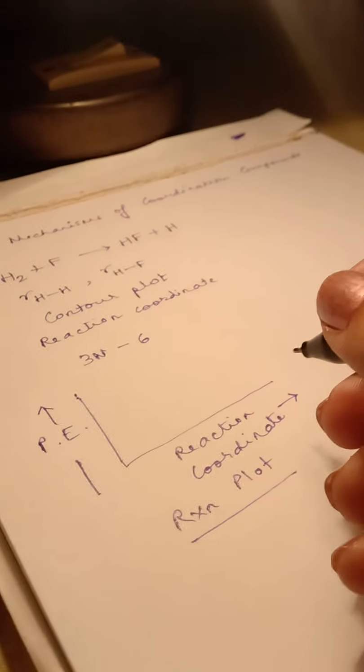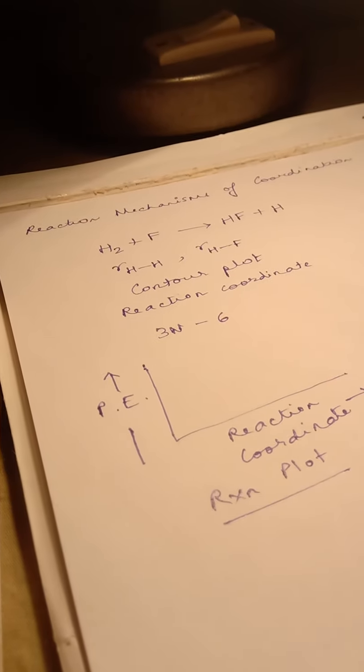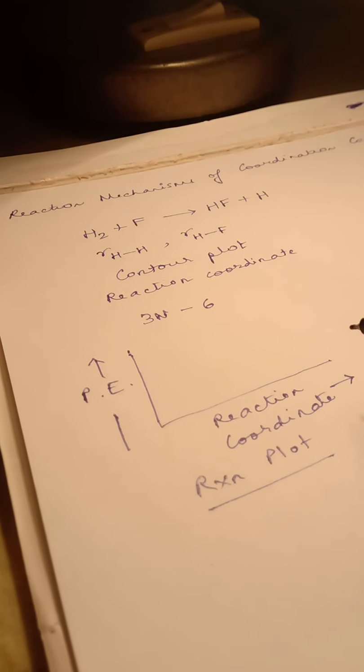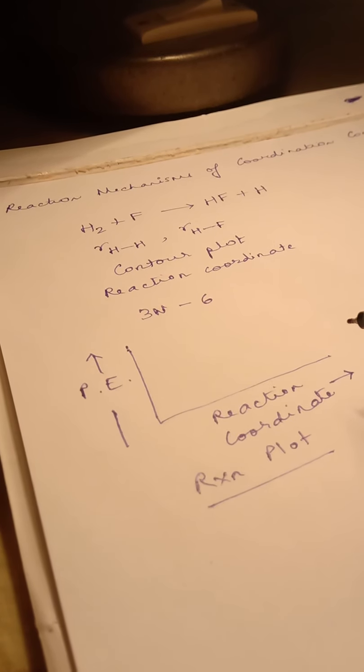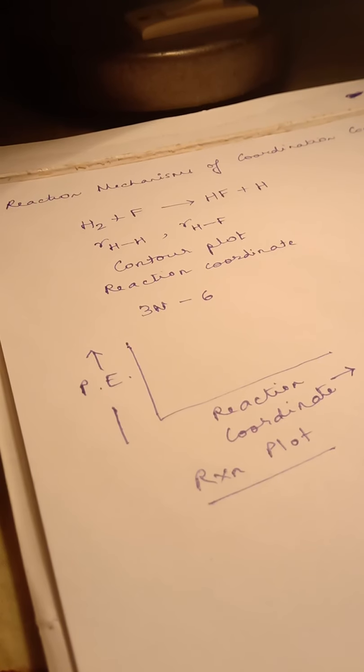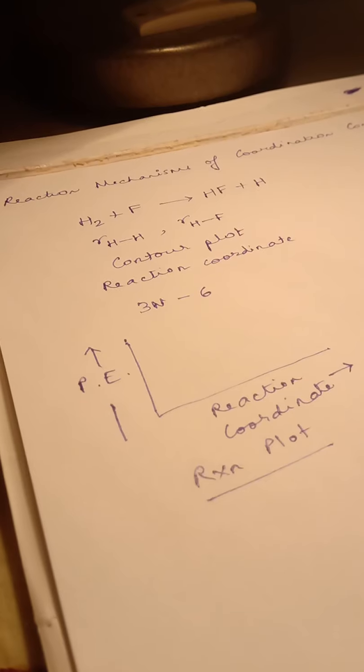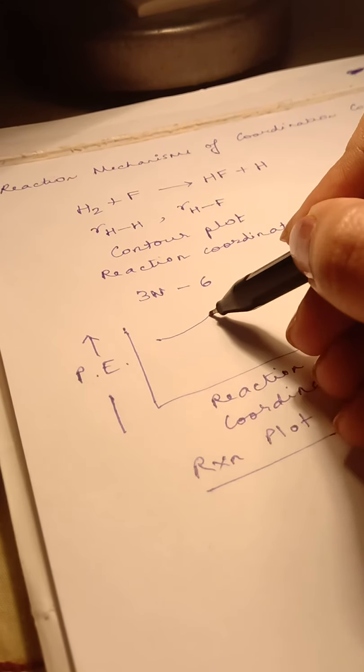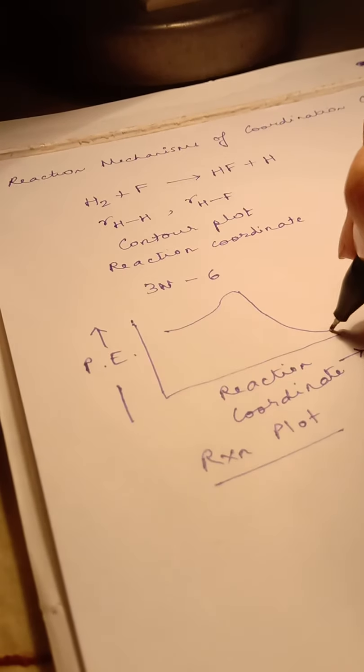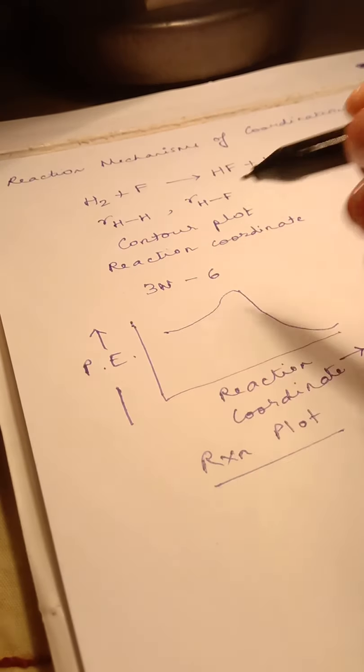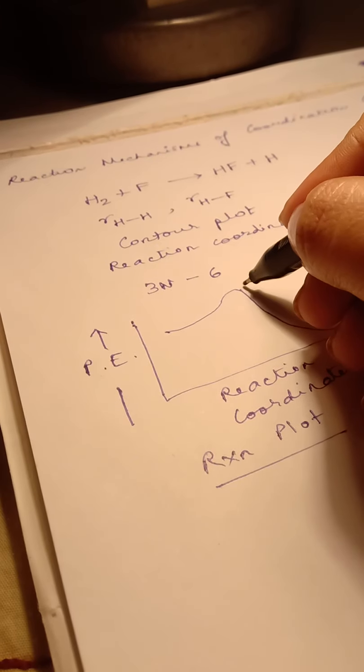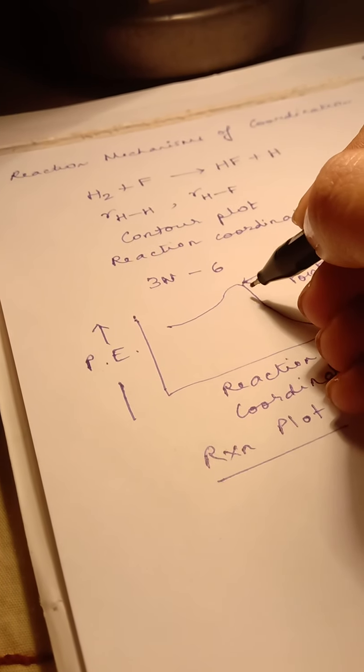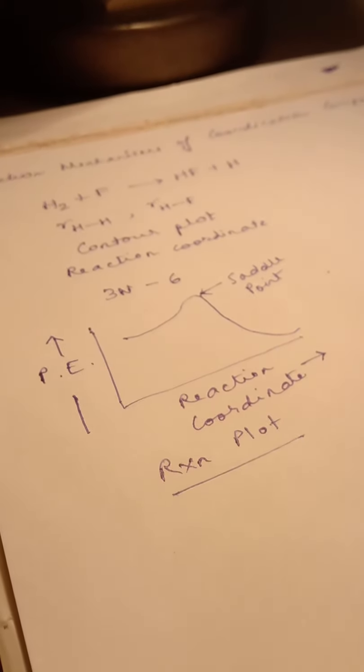The important thing that we need to know about the reaction plot is the fact that it can be of various types. What are the different types? The different types depend on how the energy is changing with the progress of the reaction. As you all know, the transition state is a point which is the highest energy point, so there is no problem regarding that, but there might be one or more intermediates involved. If you have a reaction profile like this, it means that this is the reactant and this is the product and this is the transition state. This is essentially a saddle point which indicates a sudden jump in energy over and above the maxima. This is one type of reaction plot.